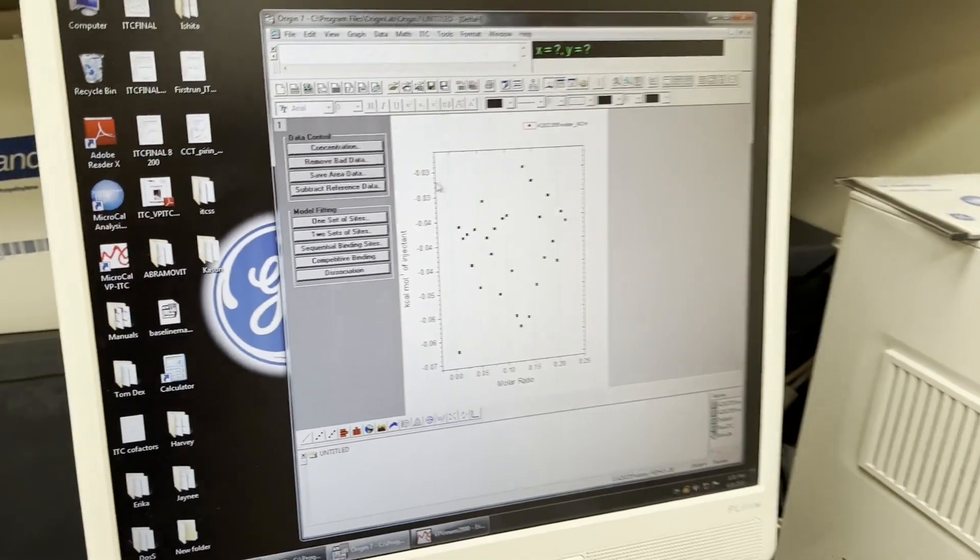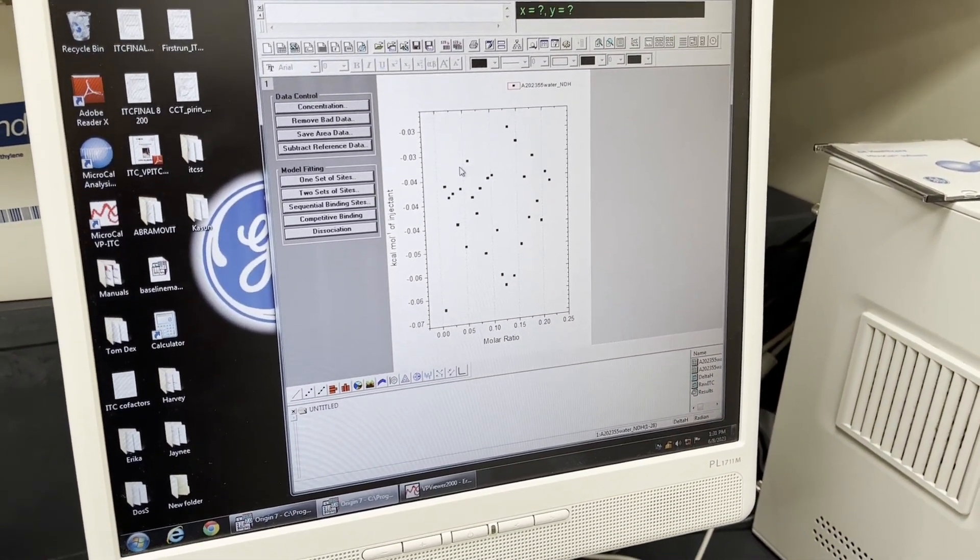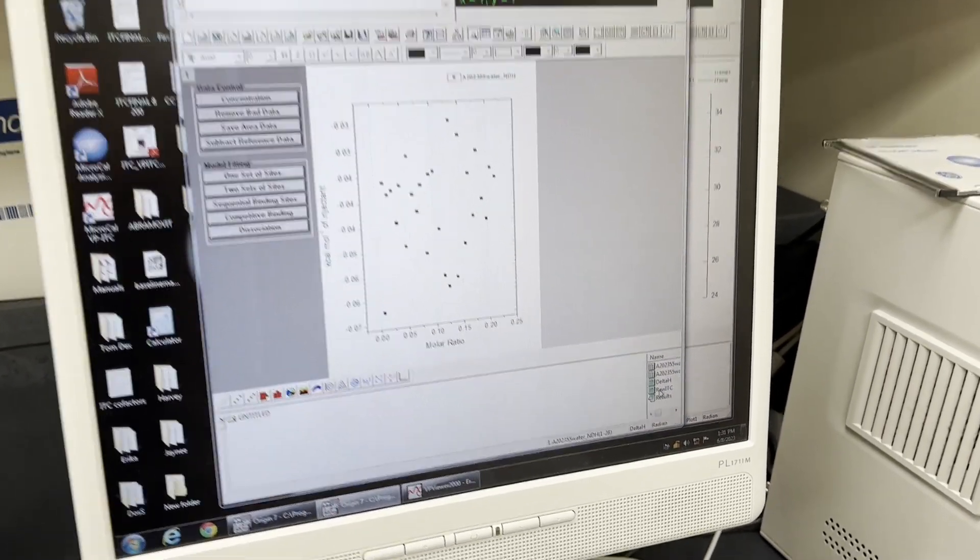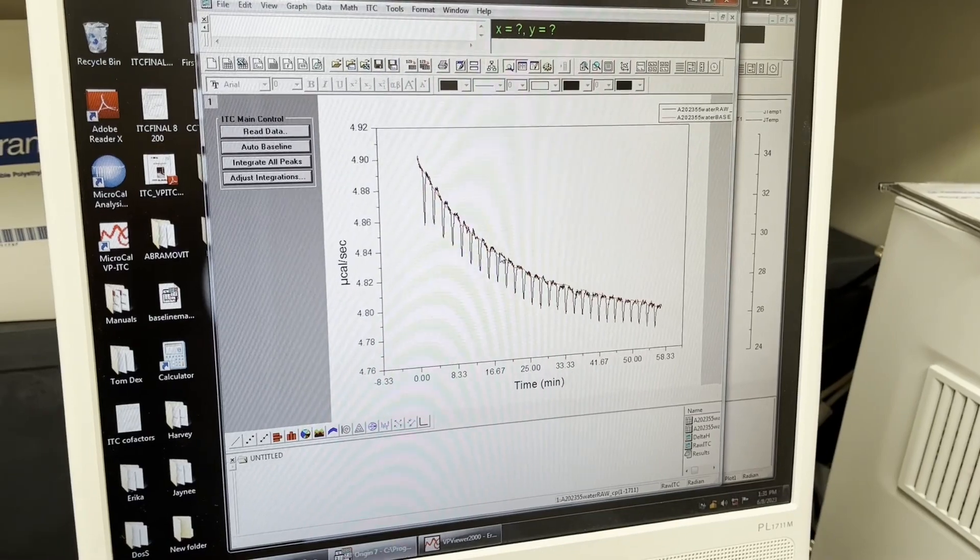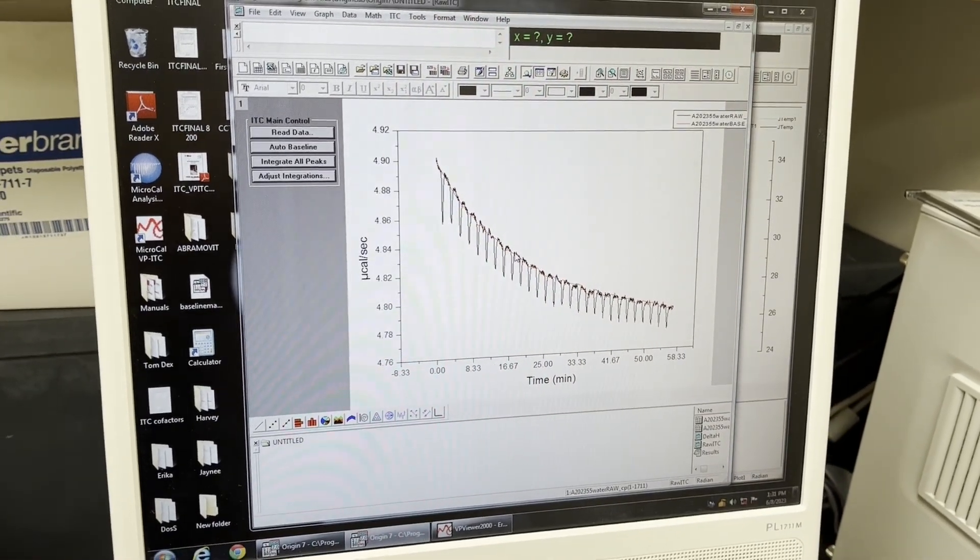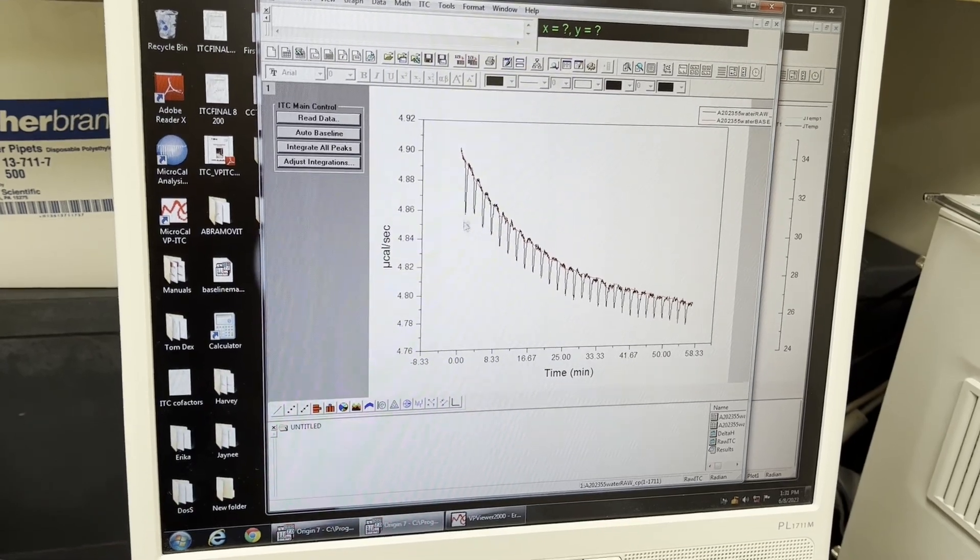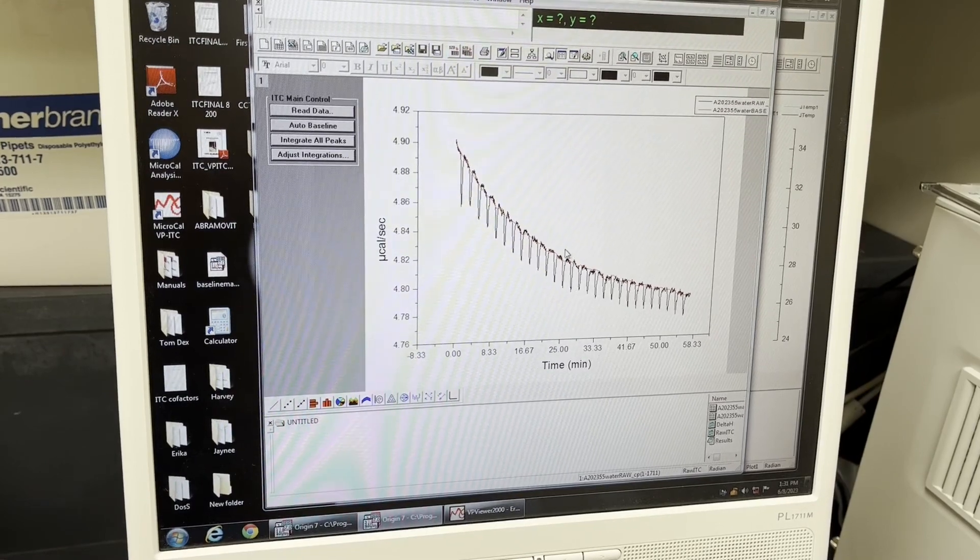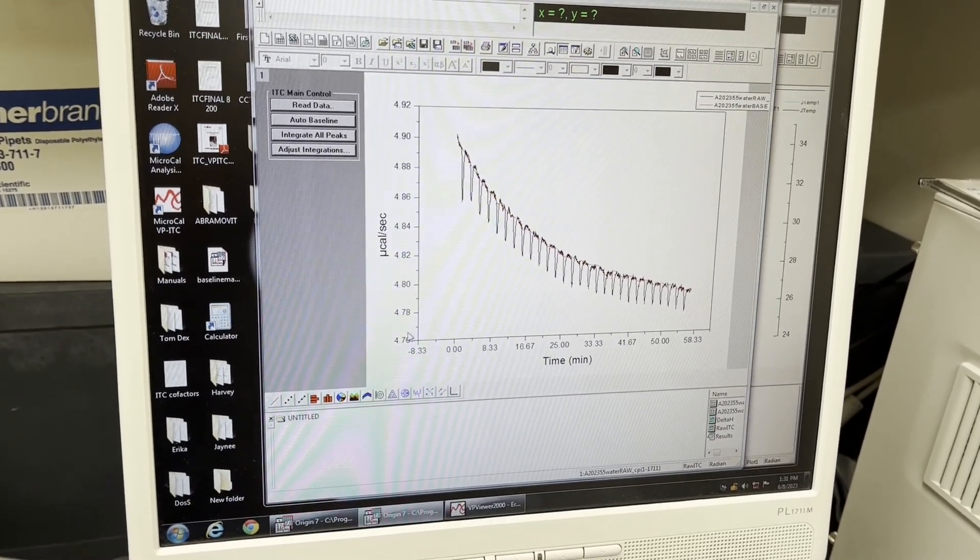This is the kcal per mole of injectant. If you would like to see the raw ITC values, you can see this is very zoomed in because we would not expect big changes in enthalpy with water water. You can see yes there's a little bit of a baseline drift but these are pretty small. Hopefully if you see real interaction this data would be much bigger.